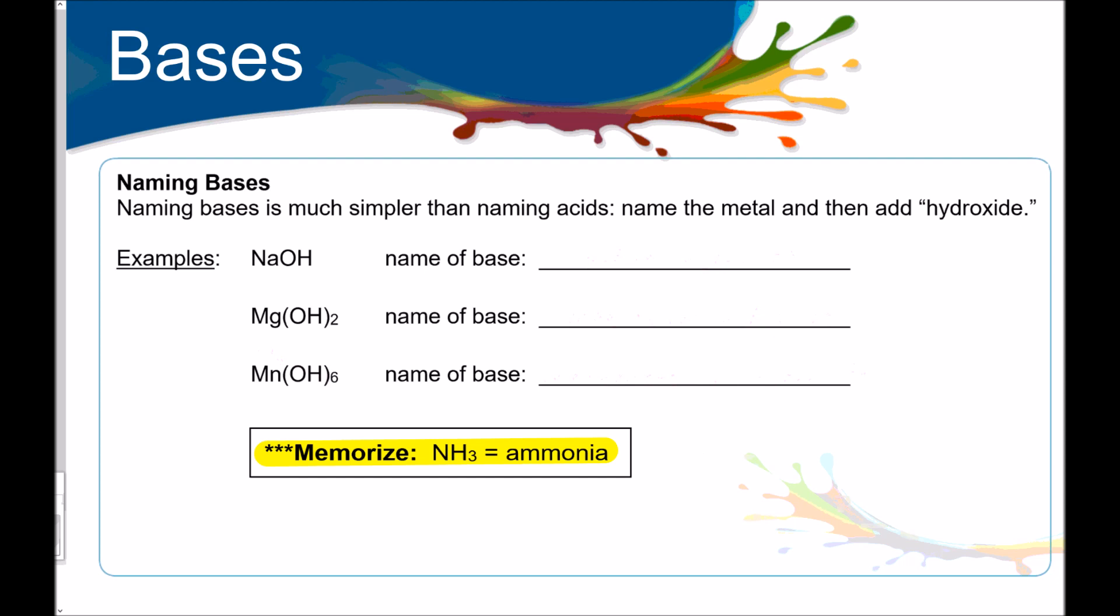Naming bases. It's much simpler than naming acids, which we'll get to later. Name the metal and then you're going to add the word hydroxide. NaOH. The metal sodium, this is hydroxide. So, guess what its name is? Sodium hydroxide. Easy, easy, easy. Mg(OH)2. Magnesium hydroxide.